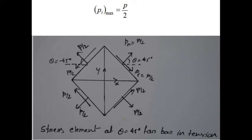All surfaces inclined at 45 degrees to the axis of pull are subjected to maximum shear stress equal to P by 2. In the second diagram, you can see a stress element showing the complete state of stress on a section cut at 45 degrees to the axis of pull. This was the variation of normal stress and tangential stress with angle theta, and the resultant stress can be found using Pn and Pt as discussed in the previous lecture.